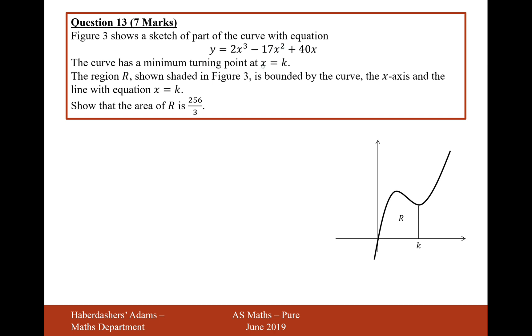The curve has a minimum turning point at x equals k, as shown in the diagram. The region R, shaded in Figure 3, so it's this region here R, is bounded by the curve, the x-axis, and the line with equation x equals k. Show that the area of R is 256 over 3.